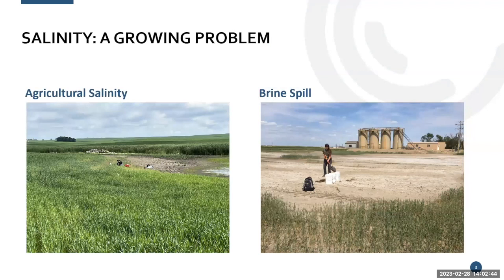Salinity is not a new problem, but it is a growing problem. Out of the 45 million acres in North Dakota, around 6 million are salinized just with natural agricultural salinity — a result of salts that come up with groundwater. As that water evaporates, it leaves the salts behind. So how do we deal with these brine spills and this agricultural salinity that's becoming such a big problem?